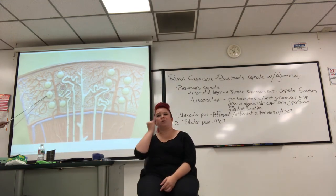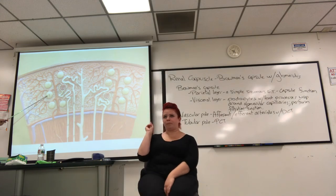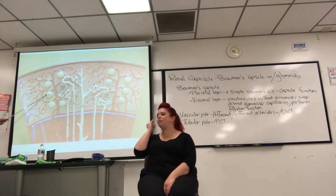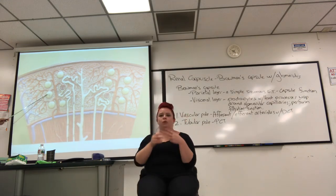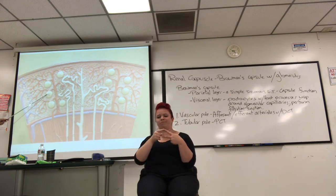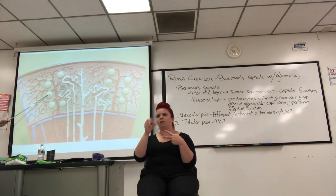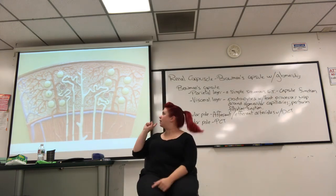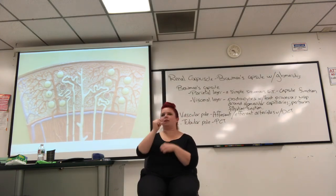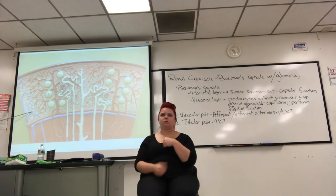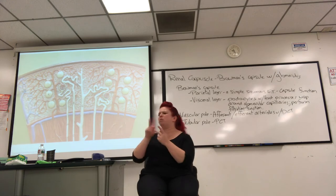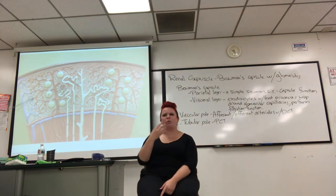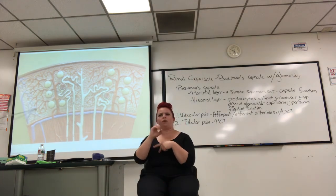Now if I had you identify something — if the choice is Bowman's capsule or glomerulus, which is a better answer? The Bowman's capsule — the glomerulus is inside there but you can't see it from the outside. What kind of capillaries are these, red to blue up here in the cortex? Peritubular.